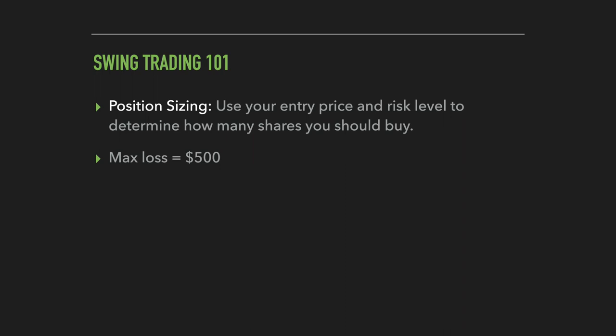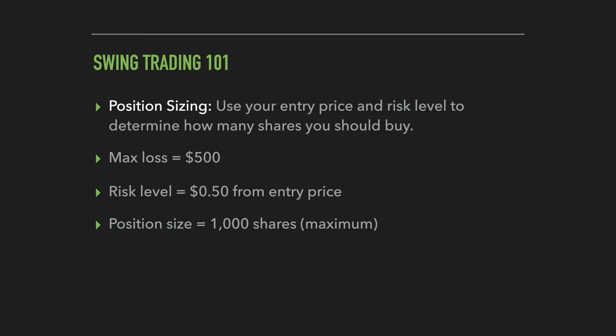Now, moving on to one of the most important and most overlooked aspects of risk management: position sizing. Your position size is simply how many shares of the stock you're going to buy, and this should be determined by your entry price, your risk level, and the maximum amount of money you're comfortable risking on any given trade. For example, if your maximum loss on any trade is $500 and your risk level is $0.50 away from your entry price, the maximum shares you'd want to buy is 1,000 — because 1,000 shares multiplied by $0.50 risk per share equals your $500 maximum loss. New traders often wonder why their losses are so large when they're putting their entire account into every trade. Every trade is different, and sometimes your risk level will be further away, but that doesn't mean you have to risk more money — it just comes down to adjusting your position size.